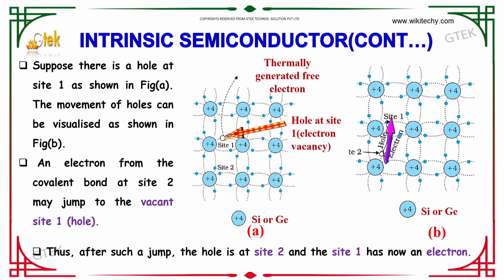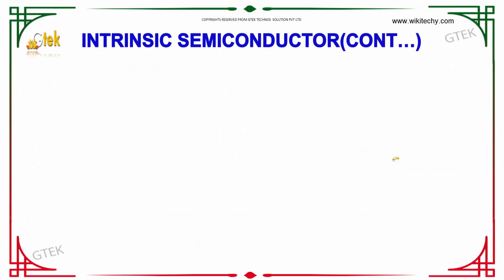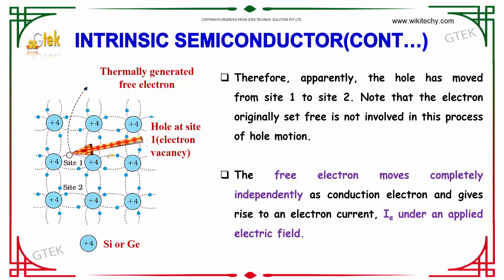Suppose there is a hole at site 1 as shown in figure A. The movement of the hole can be visualized as shown in figure B. An electron from the covalent bond at site 2 may jump to the vacant site 1. After such a jump, the hole is now at site 2 and site 1 has an electron. Therefore, apparently, the hole has moved from site 1 to site 2. Note that the electron originally set free is not involved in this process of hole motion.